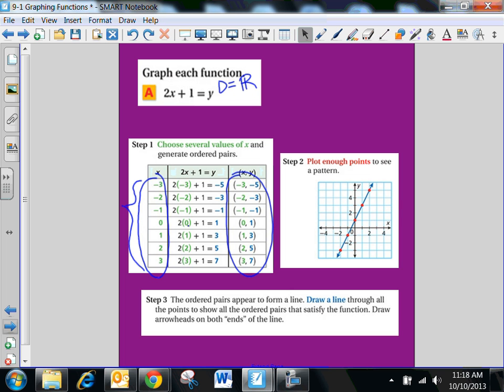So anything that's on that line going forever, forever because of that arrow, and forever because of that arrow, all of those points will be solutions to this function.